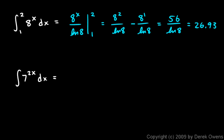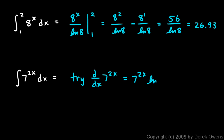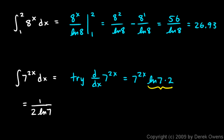The integral of 7^(2x) dx is a little tricky. I'll try differentiating 7^(2x) to see what I get. Differentiating gives 7^(2x) times ln(7) times 2 by the chain rule. So I get a 7^(2x), but I'm off by a factor of 2·ln(7). To compensate, I divide by 2·ln(7), giving the answer as 7^(2x) over 2·ln(7), or equivalently 1 over (2·ln(7)) times 7^(2x) plus c.